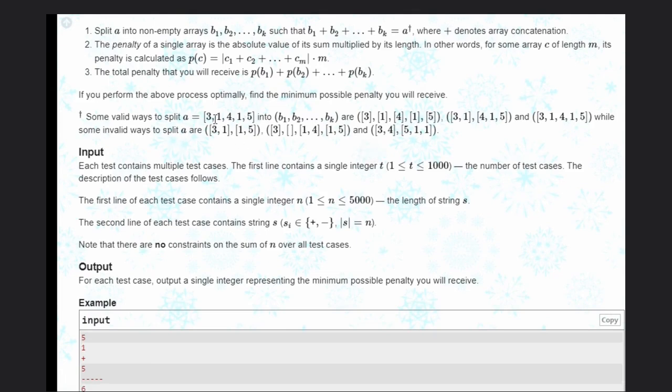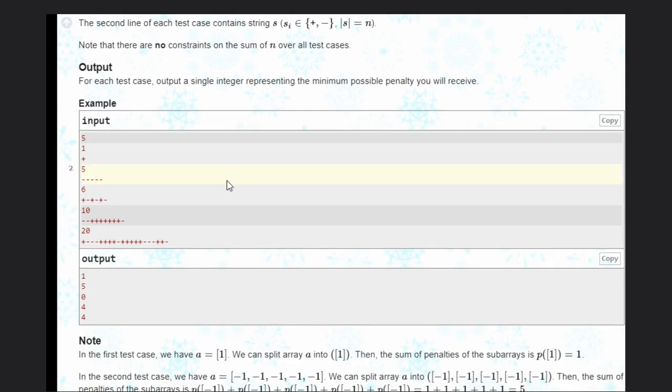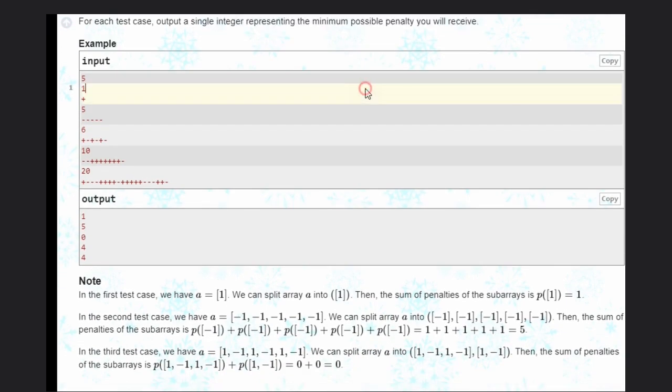So how can we split a? Like 3, 1, 4, 1, 5, or 3, 1, 4, 1, 5 - we need to take consecutive elements, that is the main case. We can't leave any element because we need to generate it again to concatenate it. What we need to do is minimize the penalty.